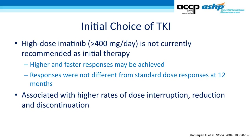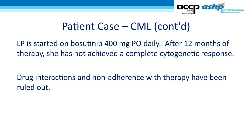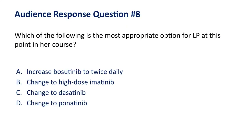Back to our CML patient: she was started on bosutinib, and after 12 months of therapy she has not achieved the gold standard complete cytogenetic response. Drug interactions and non-adherence have been ruled out. The question posed is: which of the following is most appropriate at this point in her course?